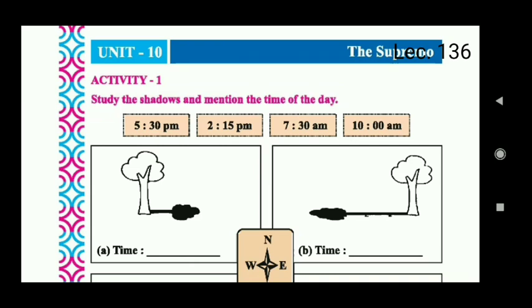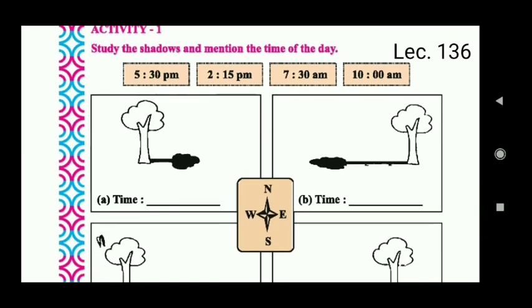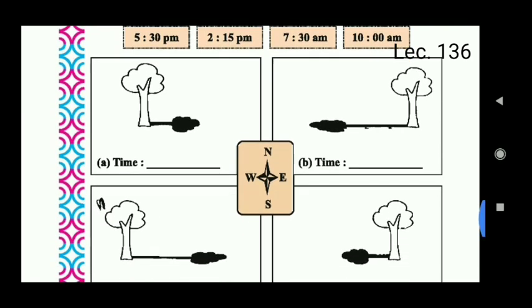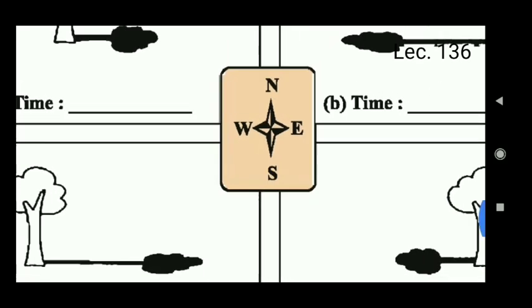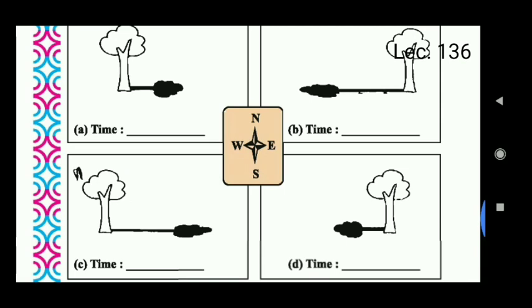Now we have to read activity number 1. Study the shadows and mention the time of the day. What do you need to do here? I am going to teach you the directions - North, South, East and West. Where the sun rises is East, and where the sun sets is West.